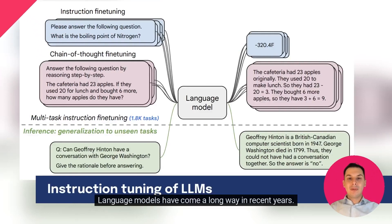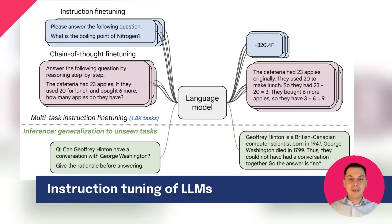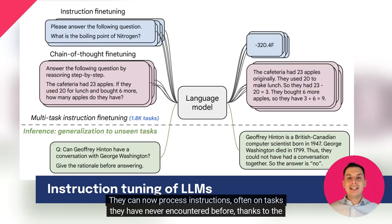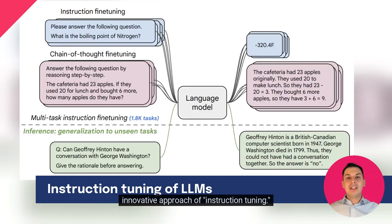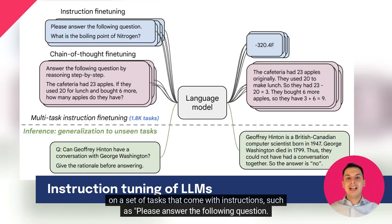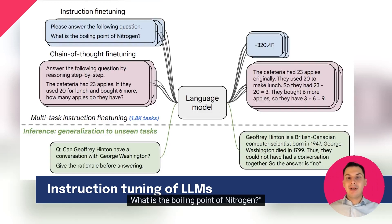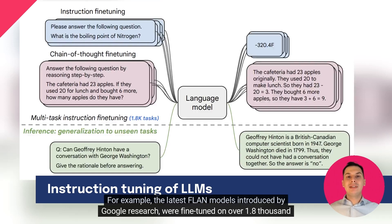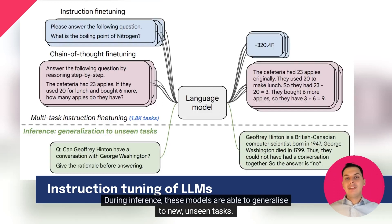Language models have come a long way in recent years. They can now process instructions, often on tasks they have never encountered before, thanks to the innovative approach of instruction tuning. The idea of instruction tuning, which is depicted on the figure, is to fine-tune a large language model on a set of tasks that come with instructions, such as: "Please answer the following question. What is the boiling point of nitrogen?" For example, the latest Flan models introduced by Google Research were fine-tuned on over 1,800 tasks. During inference, these models are able to generalize to new, unseen tasks.